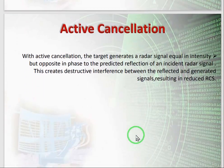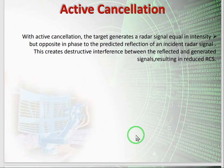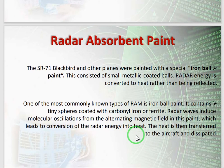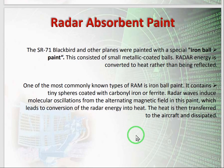The third is active cancellation. In active cancellation, the target itself generates a signal which is equal in intensity but opposite in phase, in order to cancel out the incident radar signal. This creates destructive interference and the upcoming signal is cancelled in the atmosphere, so the object is not identified.